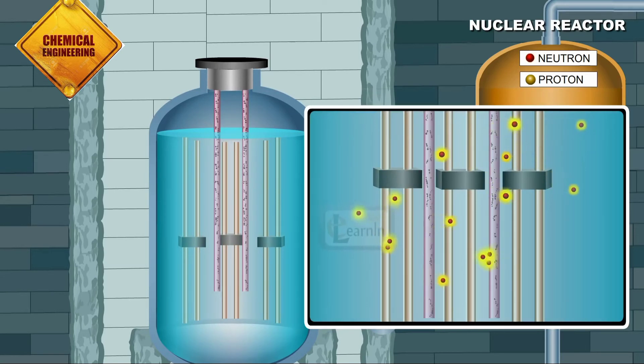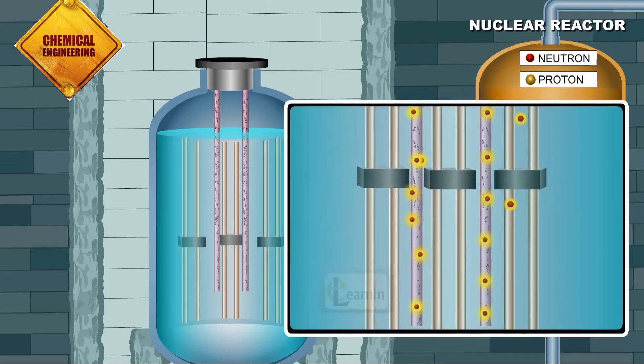The main function of the control rods is to absorb any excess or spare neutron in the moderator in order to prevent any further fission reactions.